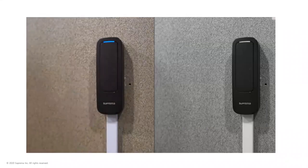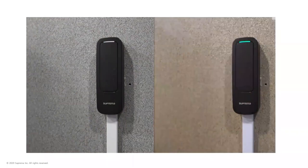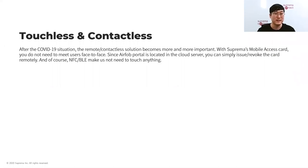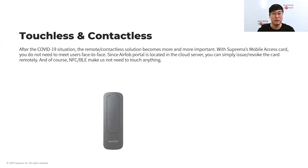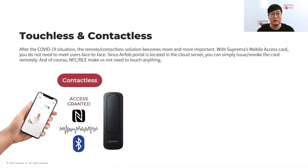It works in both foreground and background mode — just like RFID cards, you only need to place your phone near the reader. The next advantage is that mobile access is touchless and contactless. After COVID-19, we received many inquiries about touchless solutions. Face recognition is one of the most promising, but mobile access is also a great option. Between the mobile phone and the Suprema reader, it works with NFC and BLE communication, so you do not need to touch anything, making it much safer from a public sanitation perspective.